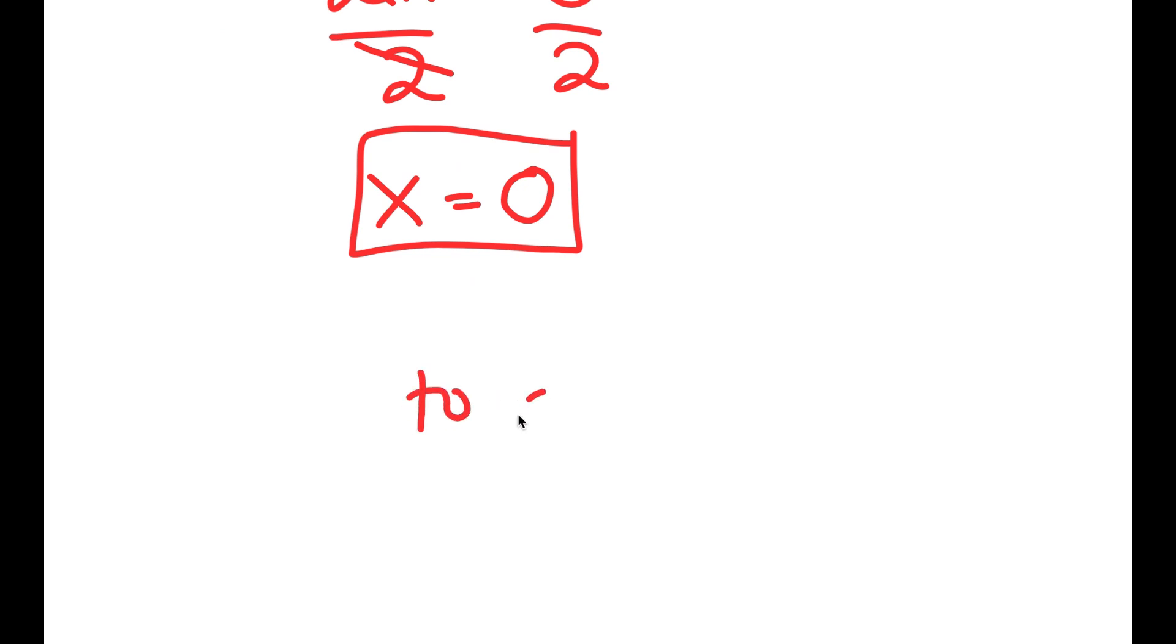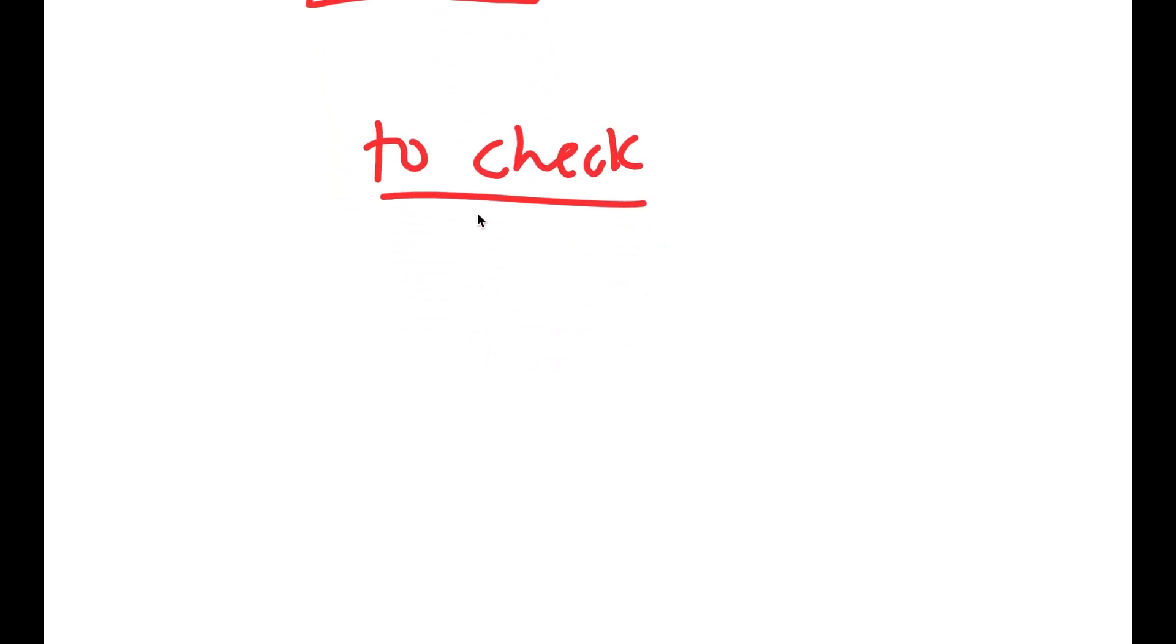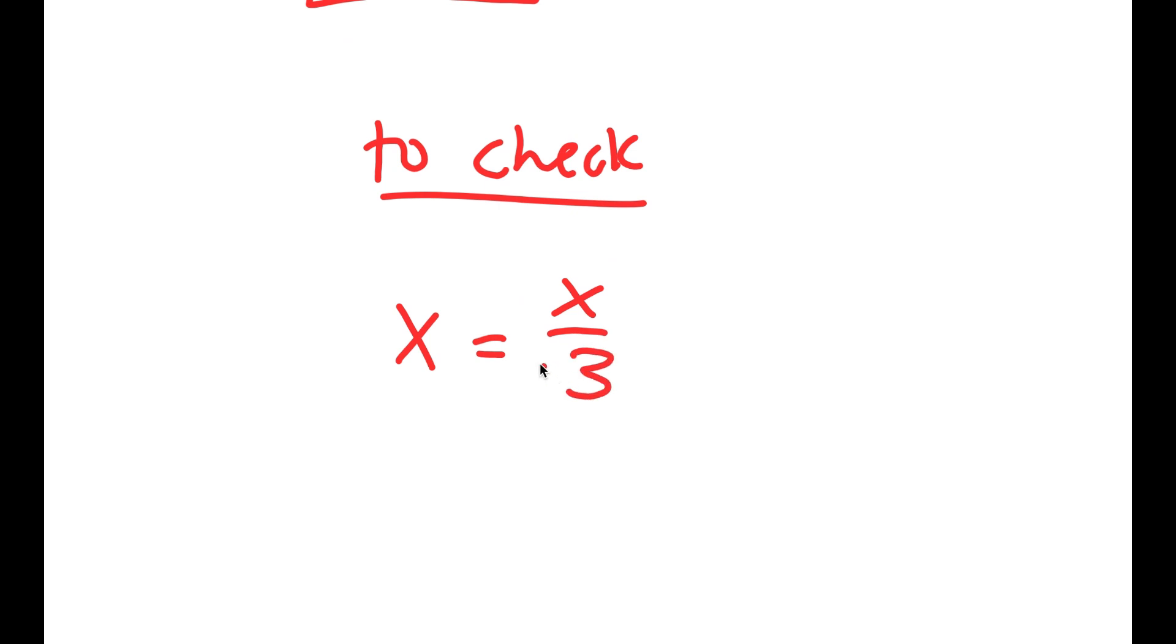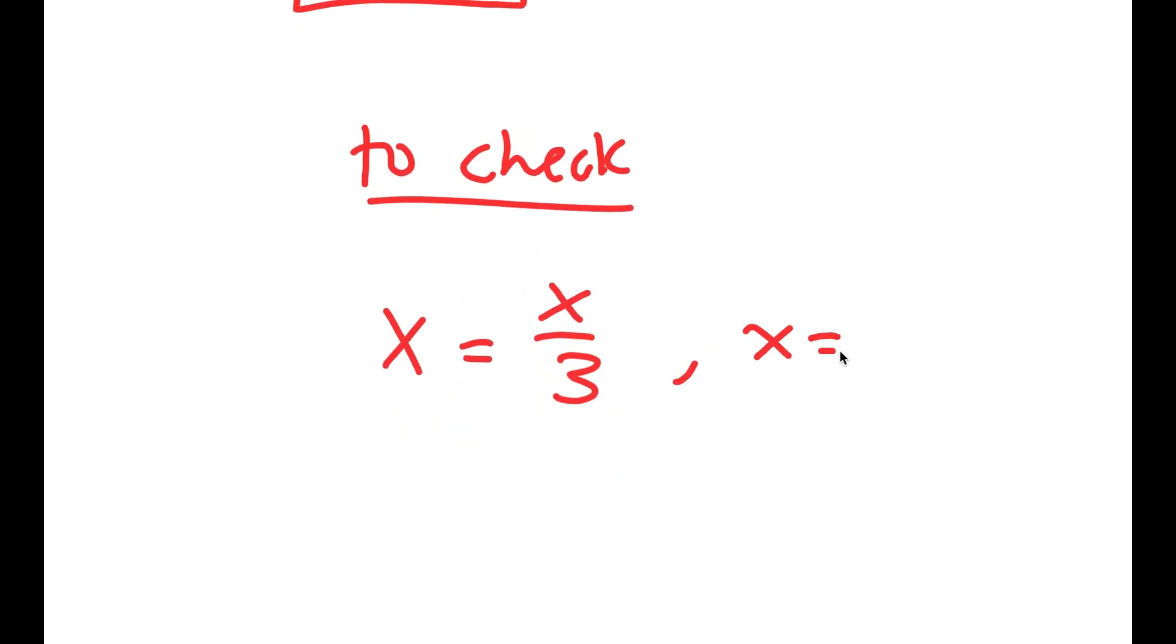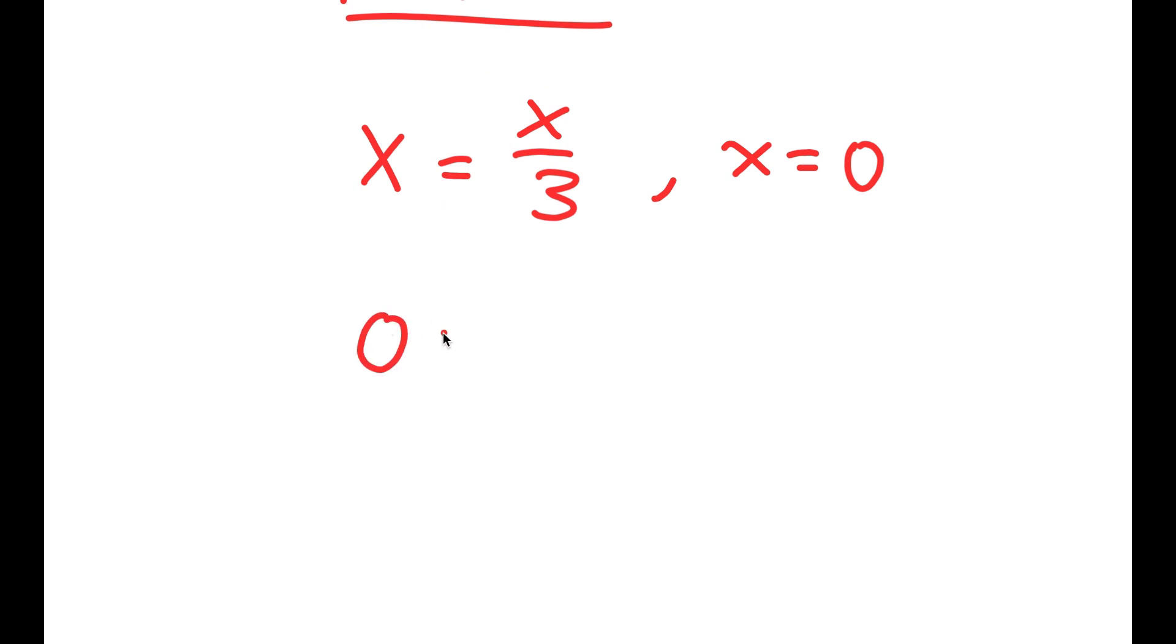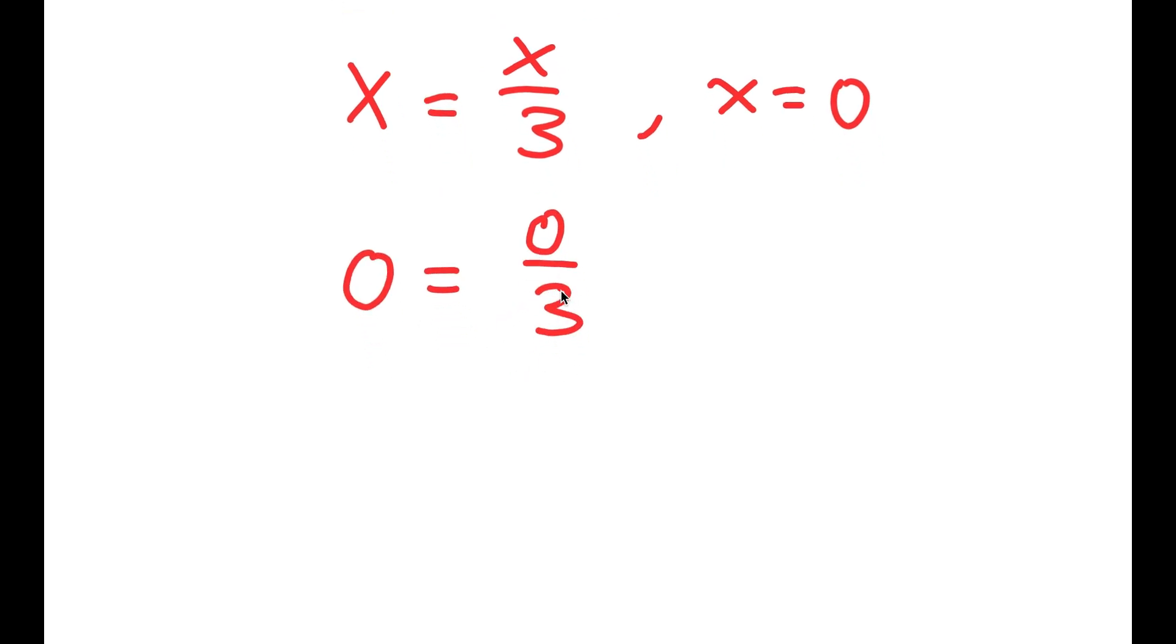Now, an important part is to check if this is right. So my equation was x is equal to x over 3, and x is equal to 0. So I plug in x for 0. I get 0 is equal to 0 over 3. 0 divided by any number is itself. So I get 0 equals 0. And this is right.